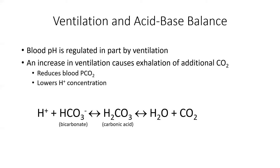During exercise, we breathe harder primarily to get more CO2 out — not to take more oxygen in. Removing CO2 reduces the partial pressure of CO2 in the blood, which lowers hydrogen ion concentration and acidity. Lower acidity allows continued exercise at a high rate. When hydrogen ions are released into the blood, bicarbonate picks up those ions, forming carbonic acid (H2CO3), which breaks down into H2O and CO2.